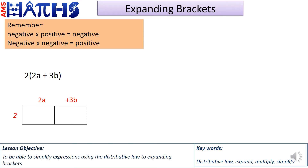I'd like you to try this question — expand the bracket. Pause the video, try to get an answer, then resume to check if you got it right. We split the terms in the bracket: 2a and 3b, written on top of the boxes, with the number in front going to the left. We multiply 2 times 2a to get 4a, and 2 times 3b to get 6b. Our answer is 4a plus 6b.